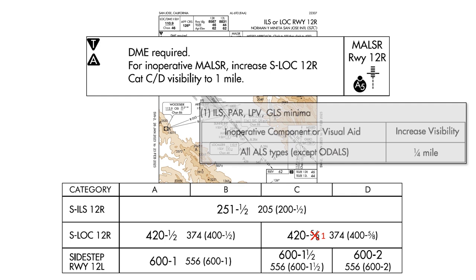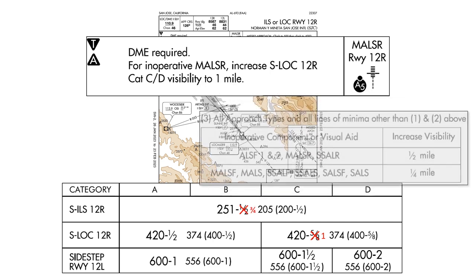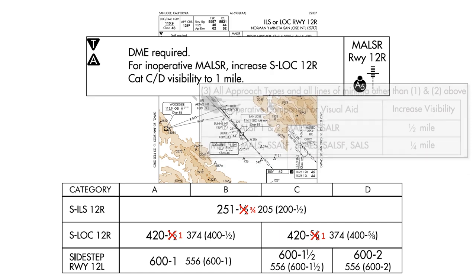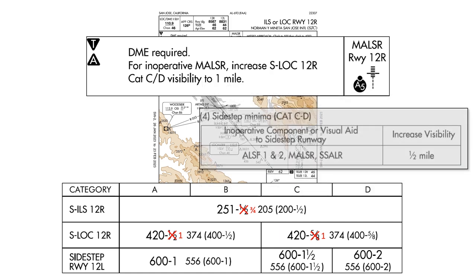For the rest of them, we'll have to go back to the inop components table. The ILS will again increase by one quarter to three quarters of a mile. The localizer for CATs A and B increases by a half mile to a full statute mile, so they'll be the same as the increased C and D minimums on the localizer. We also have minimums for the sidestep procedure to the parallel runway. The inop components table also has a table for sidestep minimums — we increase the CAT C and D minimums by a half mile.